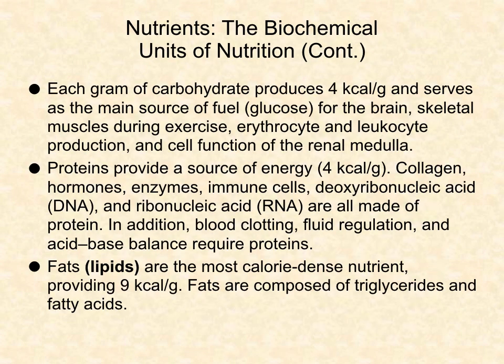Each gram of carbohydrate produces 4 kcal per gram and serves as the main source of fuel for the brain, skeletal muscles during exercise, erythrocyte and leukocyte production, and cell function of the renal medulla. Proteins provide a source of energy at 4 kcal per gram. Collagen, hormones, enzymes, immune cells, DNA, and RNA are all made of protein. Additionally, blood clotting, fluid regulation, and acid-base balance require proteins.